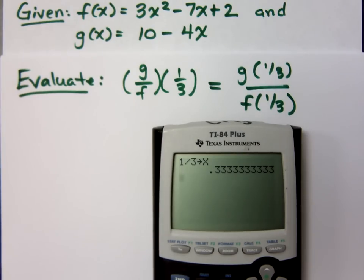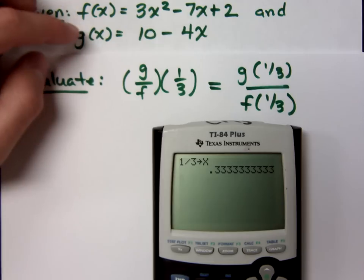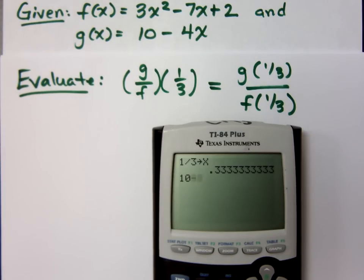So, if I do g, so that's 10 minus 4x. So, if the calculator's looking at x, it's going to see 1/3. What in the world does that mean? It means what? 8 and 2/3. Let's go ahead and convert that to a fraction. 26/3.